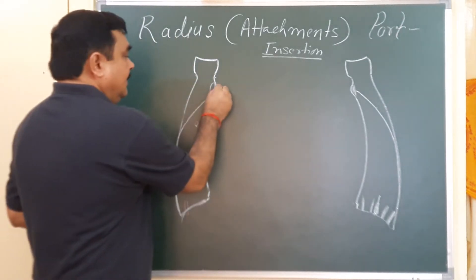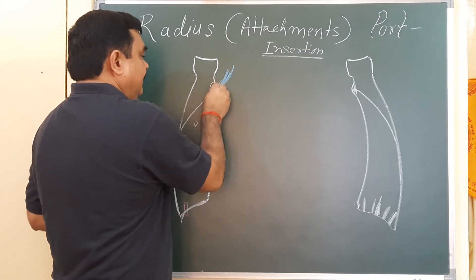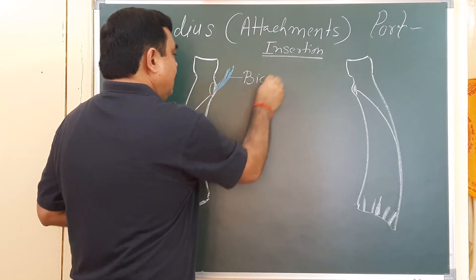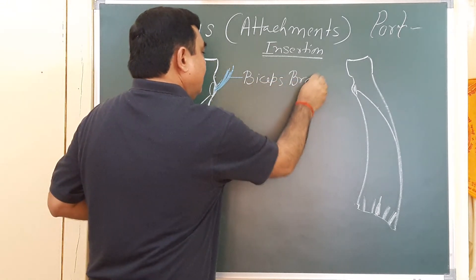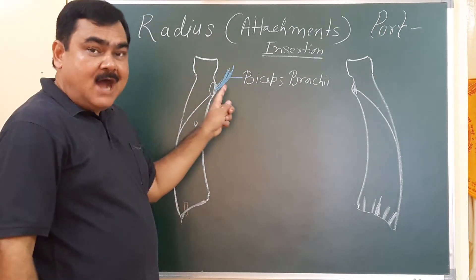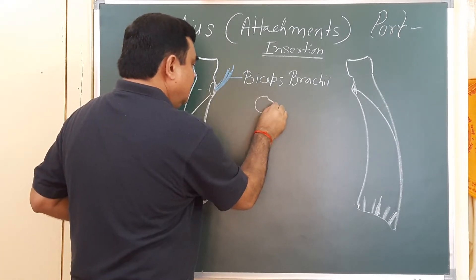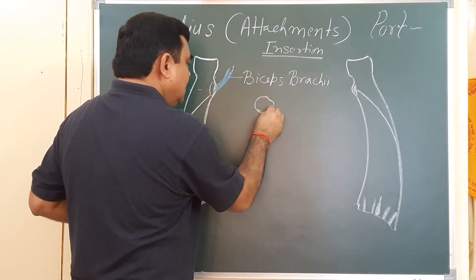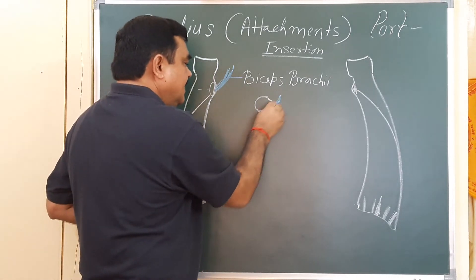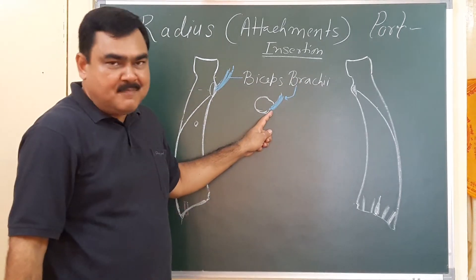The muscle inserted here is biceps brachii. It attaches on the posterior part of the radial tuberosity. If you look at a transverse section at this level, you will find this is the radial tuberosity and this is the radius. The posterior part is rough, and in this rough part the biceps brachii muscle is attached.